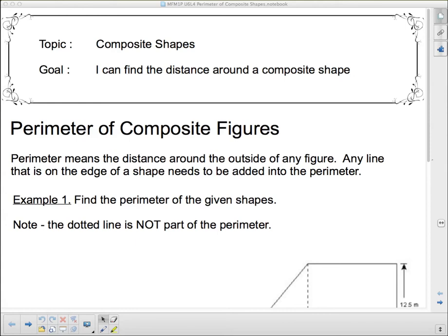Well, hello and welcome back 1P. We're still talking about composite shapes today, but instead of finding area, we're finding perimeter.